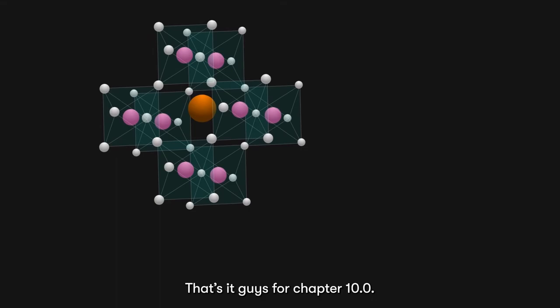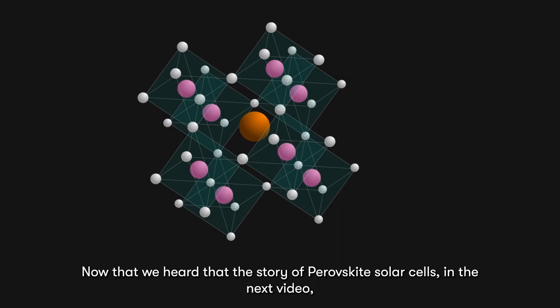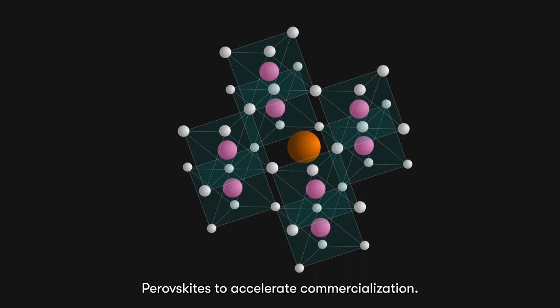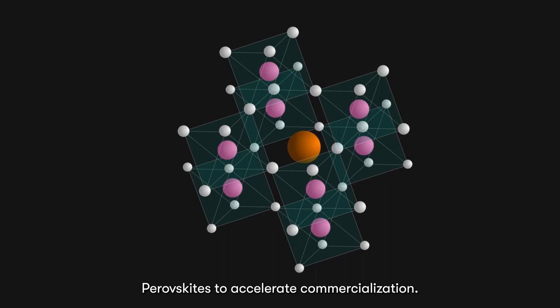That's it, guys, for chapter 10.0. Now that we heard the story of perovskite solar cells, in the next video, we will go a bit more detail to talk about how do we improve perovskites to accelerate commercialization. Take care and goodbye.